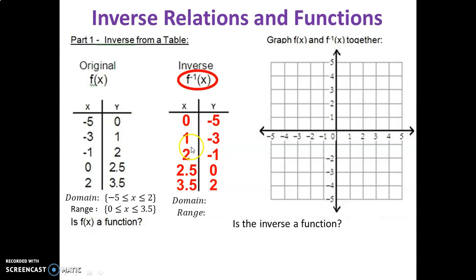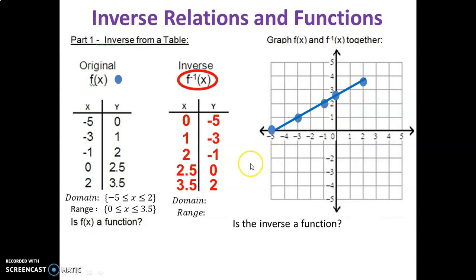There are all the inverted points. Now let's plot those graphs. I'm going to plot the original in blue: negative 5, 0; negative 3, 1; negative 1, 2; 0, 2.5; and 2, 3.5. Connect those because we know there's a continuous domain and range — everything exists in between those two endpoints. Next, plot the inverse in green: 0, negative 5; 1, negative 3; 2, negative 1; 2.5, 0; and 3.5, 2. Connect those as well.